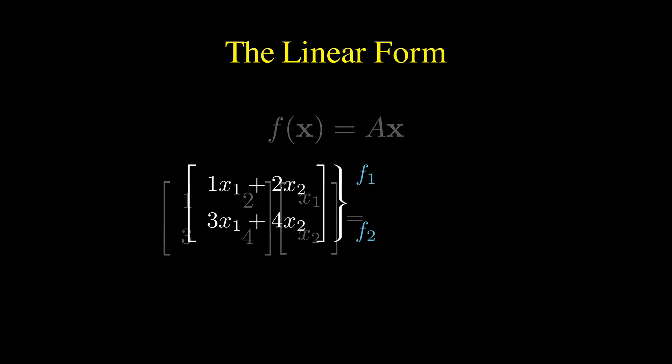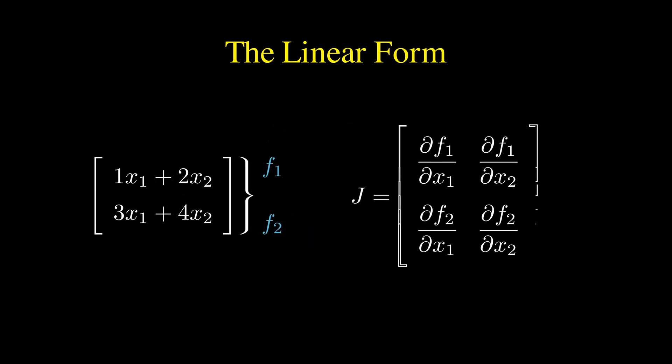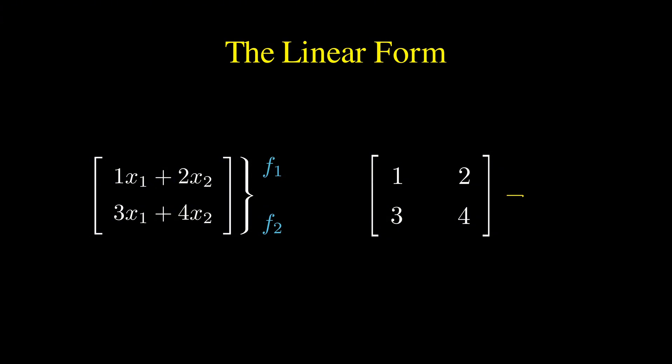The derivative of this vector-valued function is defined by the Jacobian matrix, which contains all partial derivatives. We calculate the partial derivative of f1 with respect to x1 and x2 and do the same for f2. For f1, the derivative with respect to x1 is 1 and with respect to x2 is 2. For f2, we get 3 and 4 respectively. Arranging these in a matrix, we recover exactly our original matrix A.